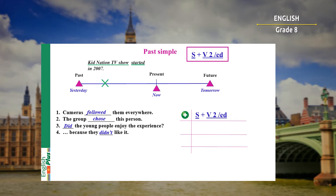Look please at sentence number four: Because they didn't like it. This sentence is negative. So to make a negative sentence, we use subject with verb 'didn't', and then we use verb form number one. Subject, didn't, verb in the first form.